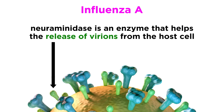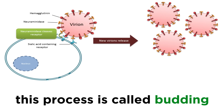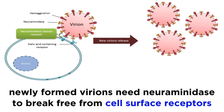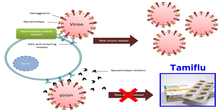Neuraminidase is an enzyme that's crucial for releasing newly formed virions from the host cell. Influenza viruses bud out of the host cell, taking some of the host's lipoprotein envelope with it, but the newly formed virions need neuraminidase to break free from the surface receptors they were bound to. Neuraminidase destroys these receptors so that the virus can go on to infect another cell. Anti-influenza drugs, like Tamiflu, act by inhibiting neuraminidase activity, which is why it's important for these drugs to be taken very early in the infection cycle.